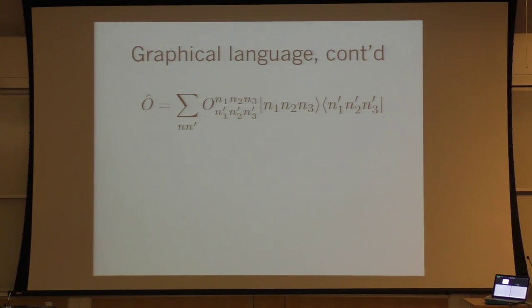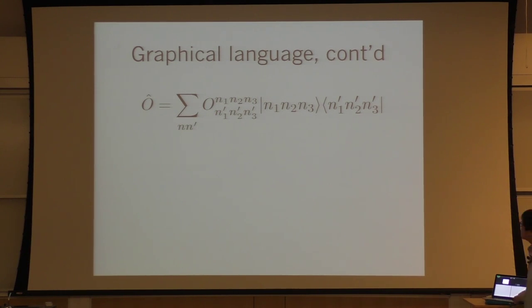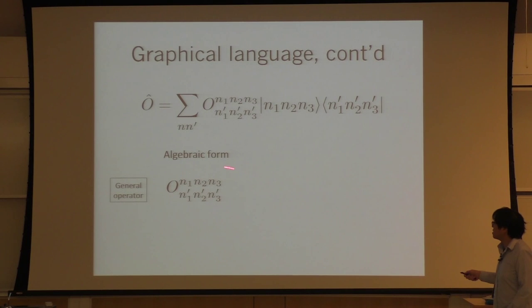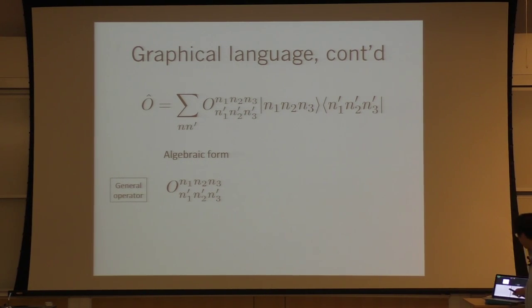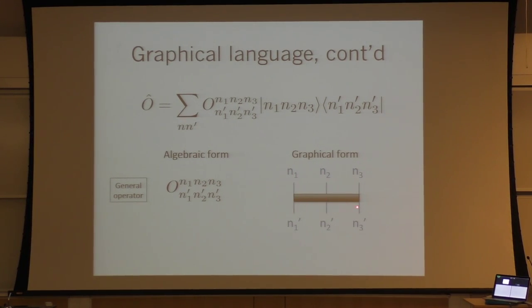An operator is similarly written in terms of amplitudes, but now with indices for both the bra and the ket. A general operator can be represented by a tensor of its matrix elements. In picture form, I have legs for the bra and legs for the ket — physical indices for both. That's not too bad.